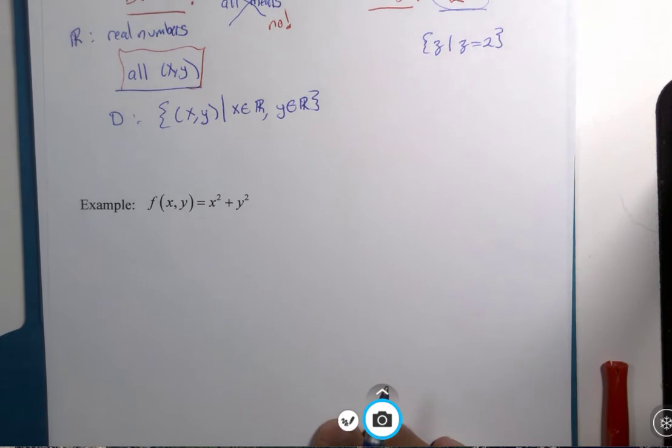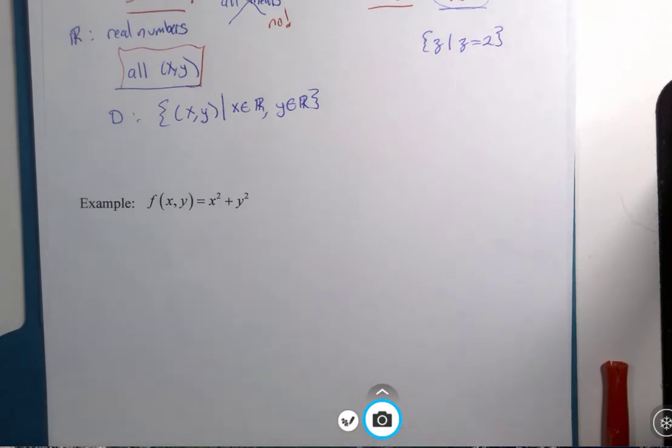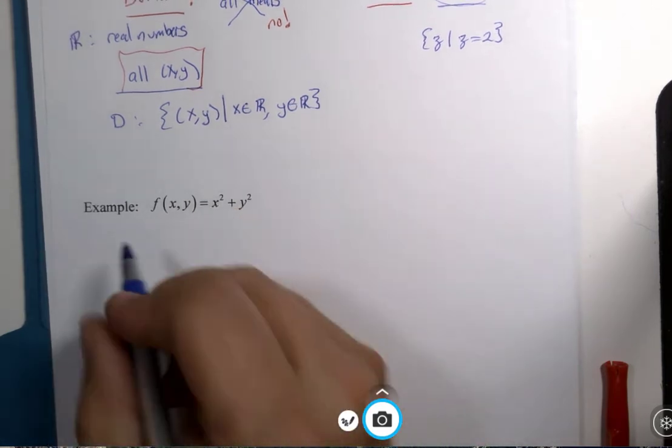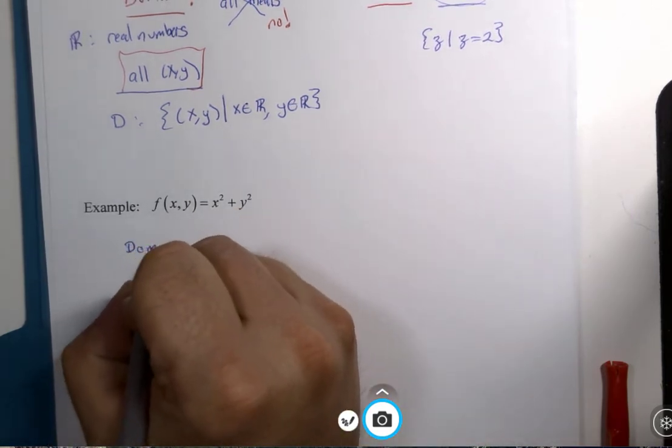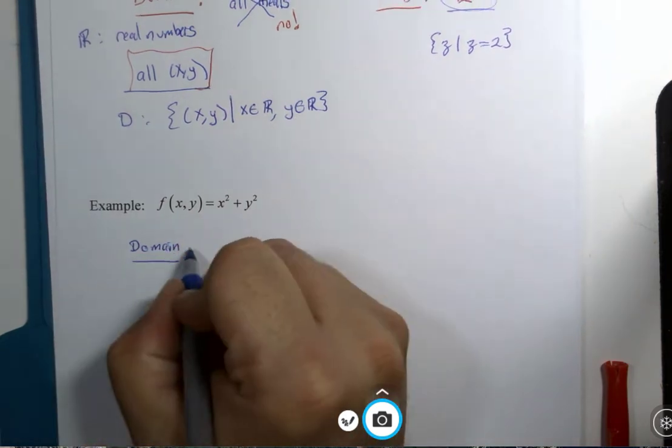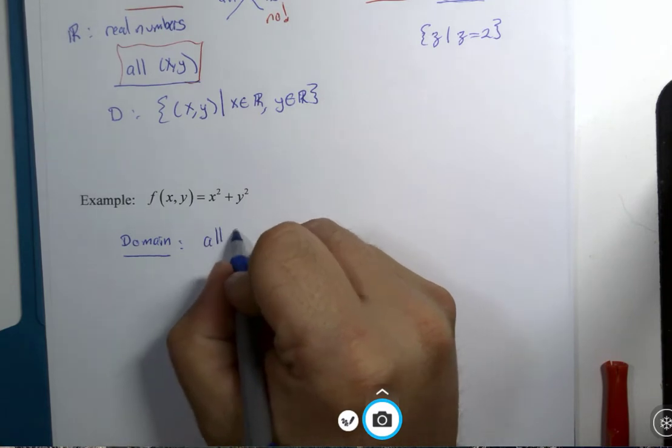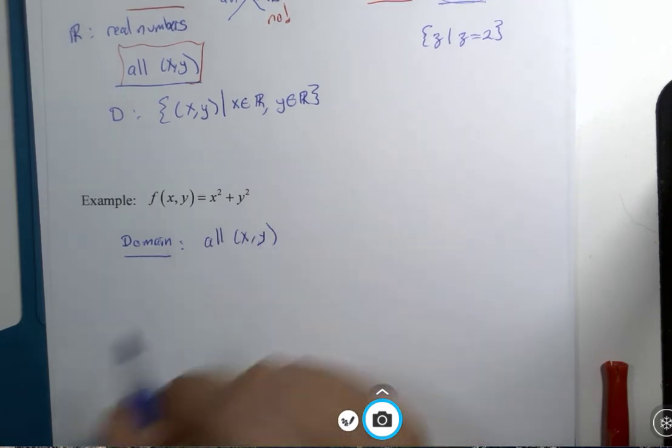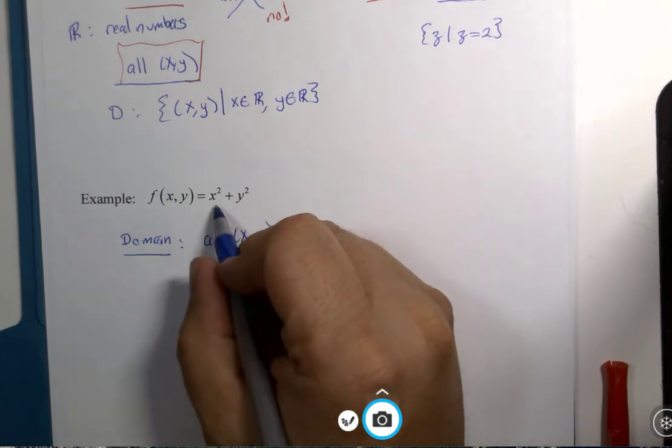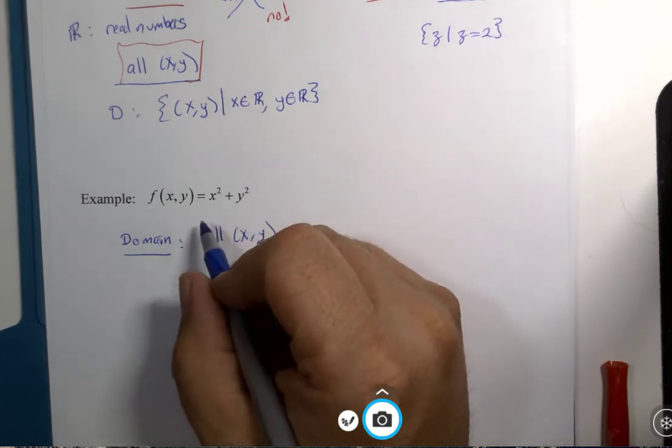Example: f(x,y) = x² + y². Domain and range again. Well I think we could make an argument that the domain here that you can use all x, y pairs that you want to. X could be positive and x could be negative.